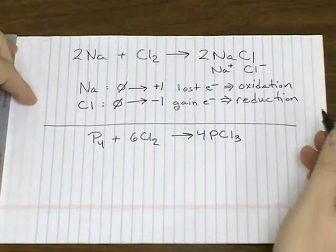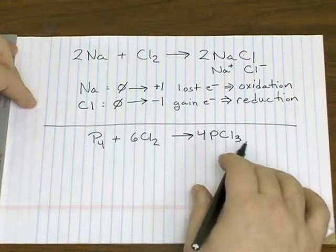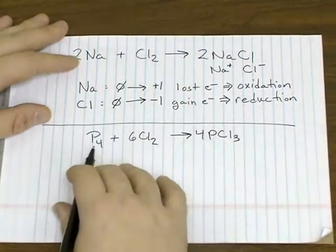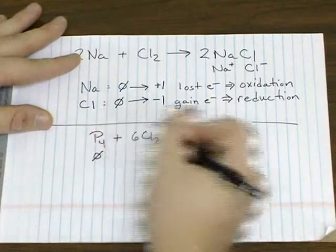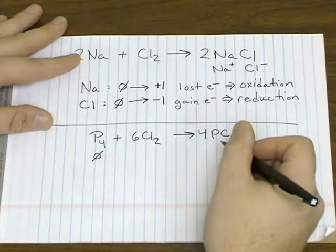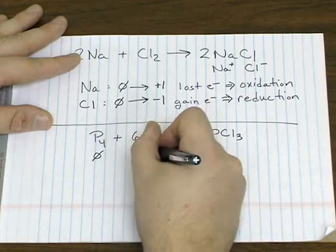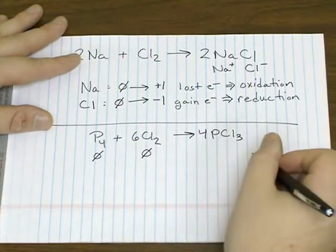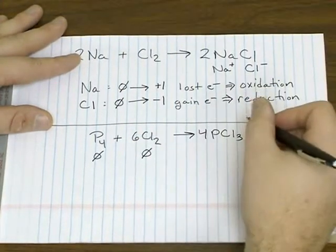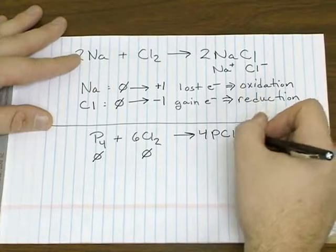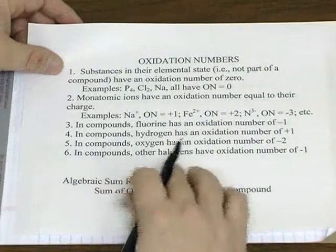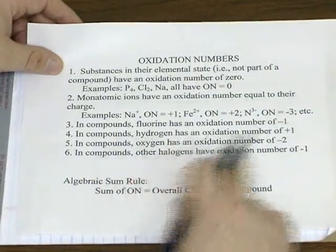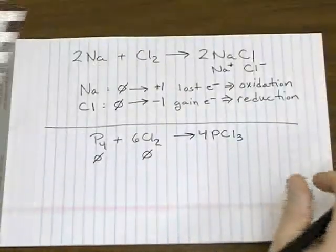So using oxidation numbers for the second example. Phosphorus is in its elemental state, so it's given an oxidation number of zero. Also chlorine is given a zero oxidation number. For PCl3, we're given a rule for chlorine. It's one of the other halogens and it's going to have an oxidation number of negative one.